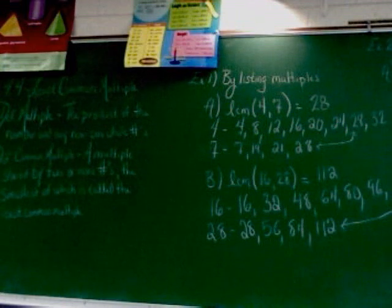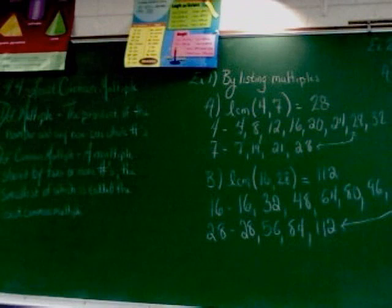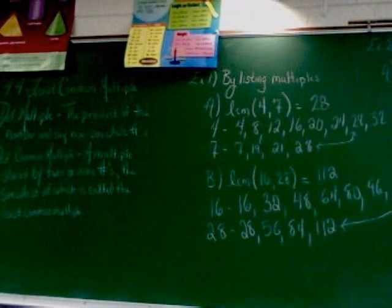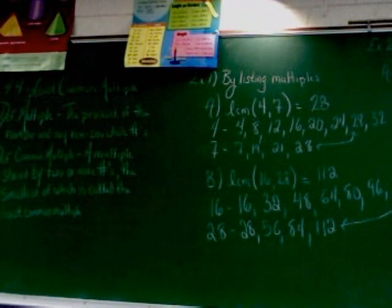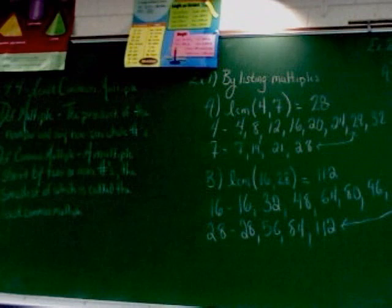Now, obviously, as you can see from that example, depending on what the numbers are, this type of problem could be a real pain if you have to list multiples. So, of course, we have a second way to do that. We can continue to use the factor trees or the method of prime factorization. The part you have to do changes once you get past making the factor tree, but you can still start off with the factor trees, just like we did with greatest common factor. So, that's exactly where we're going to start.